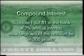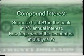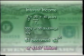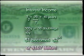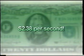Let's take another example of seven percent per year — compound interest. Suppose I put one dollar in the bank at seven percent compound interest. How large would the bank account be in 300 years? The doubling time is 10 years. Divide 10 into 300, and it doubles 30 times. Two raised to the power of 30 is a little over one billion dollars, and your interest would be coming in at the rate of two dollars and 38 cents per second.